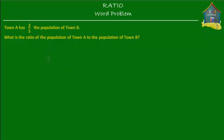Welcome to homecampus.com.sg. The purpose of this word problem is to show you how fractions and ratios are related to each other. Here goes the word problem: Town A has two-fifths the population of Town B. What is the ratio of the population of Town A to the population of Town B?